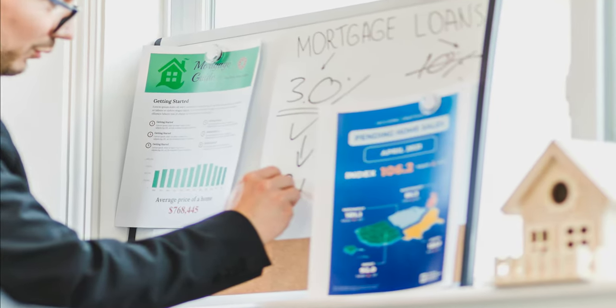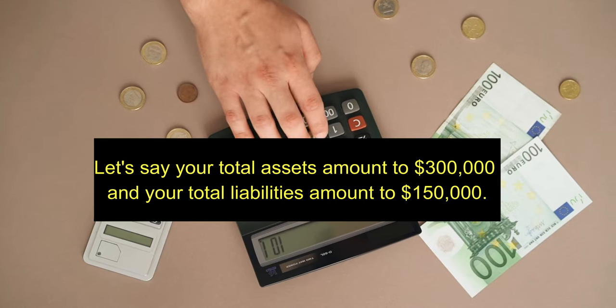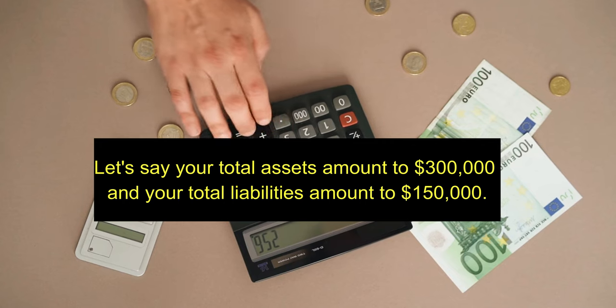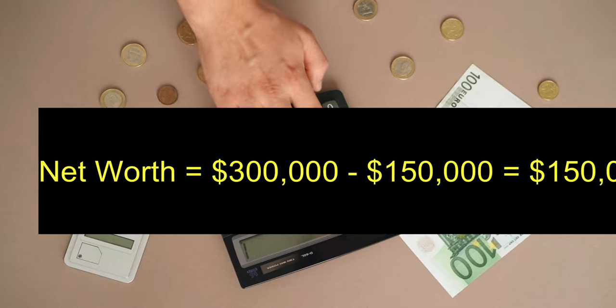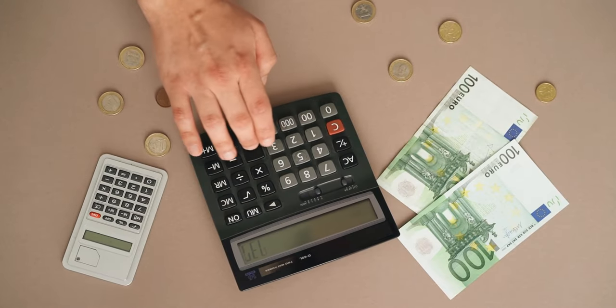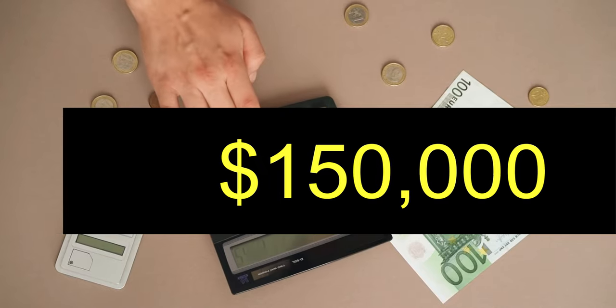Let's say your total assets amount to $300,000 and your total liabilities amount to $150,000. Net worth equals $300,000 minus $150,000 equals $150,000. Your net worth in this example would be $150,000.